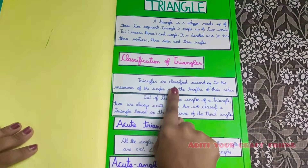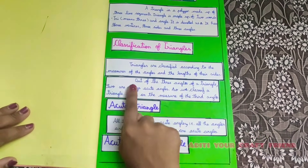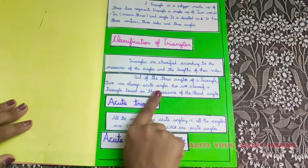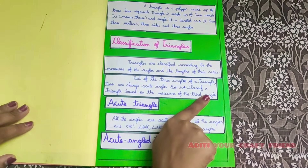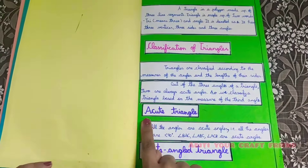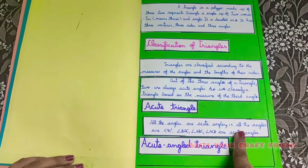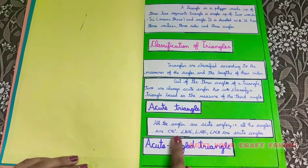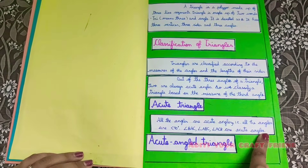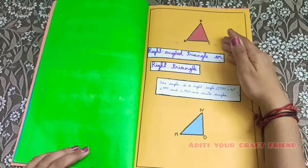Classification of triangles. Triangles are classified according to the measures of the angles and the length of their sides. Out of the three angles of a triangle, two are always acute angles, so we classify a triangle based on the measure of the third angle. Acute angle triangle: all the angles are less than 90 degrees. This is an example of an acute angle triangle.